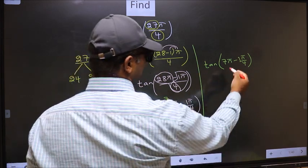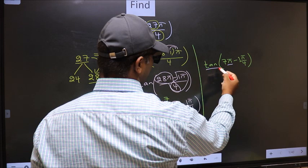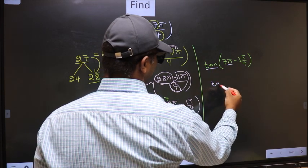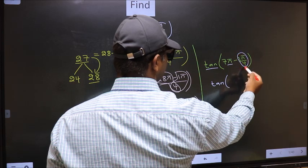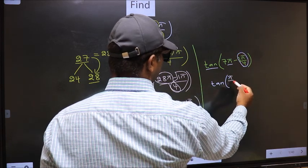Next, here, we have π. So, tan is not going to change. It will remain tan. And inside, we get this angle, π by 4.